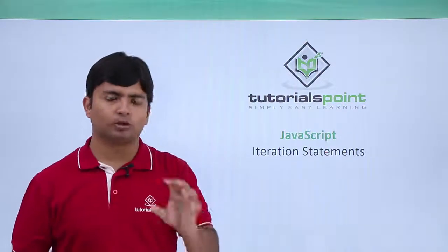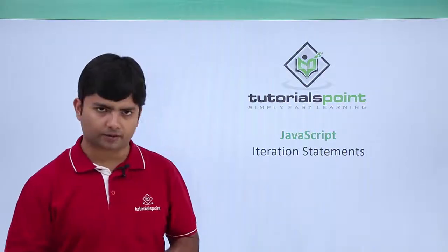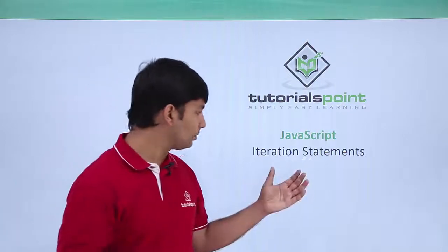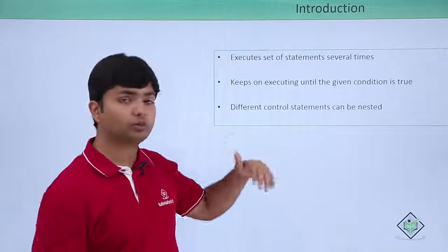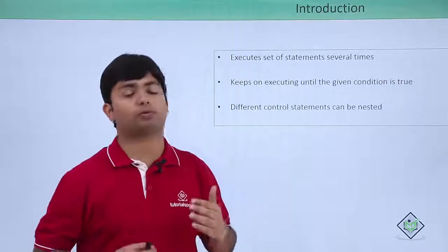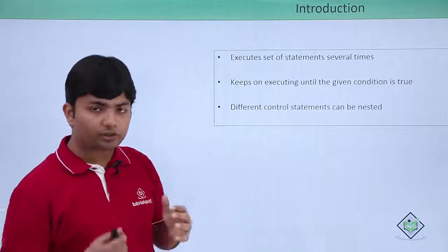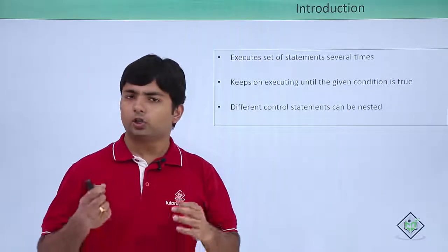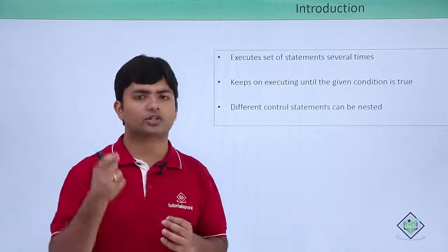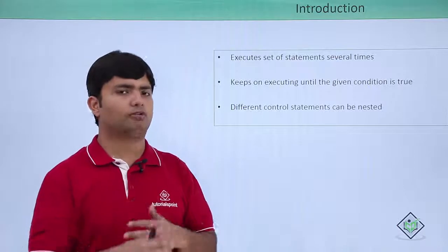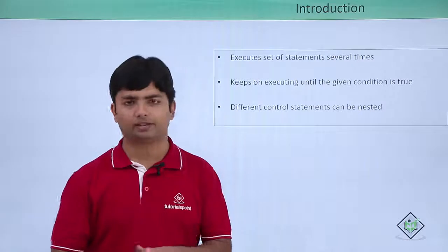And inside the loop, we will check the condition — if the number is even, we will print that. Such things can be done by iteration statements, which allow the execution of a particular block of code multiple times. Whenever you write a loop, you have to pass a condition so that until that condition is true, the loop keeps executing, and as soon as it is false, the loop gets terminated.